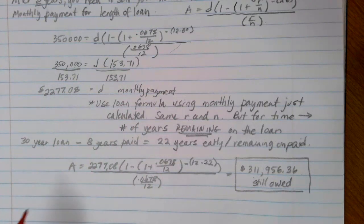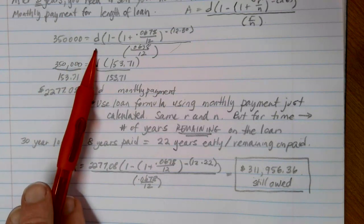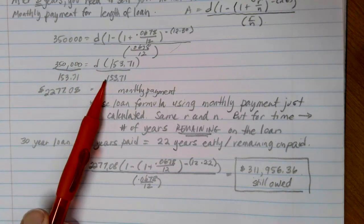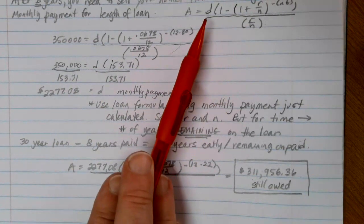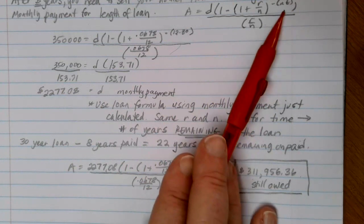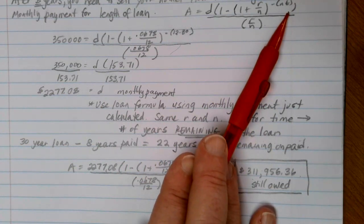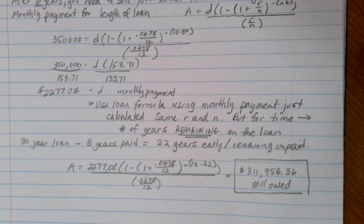So quick summary, if you want to pay off a loan early, make sure that you know what your regular payment is for the full amount of the loan. And then we're going to go back and use the loan formula with that monthly payment. Same loan information, but the T is now going to be the time remaining on the loan that you haven't paid off yet. And then we can do our calculation for A from there.